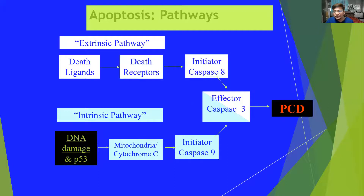In the extrinsic pathway, factors are going to be external. For example, the death ligands bind to the death receptors on the cell surface, which activates the initiator caspase-8 and finally leads to caspase-3, which leads to programmed cell death.